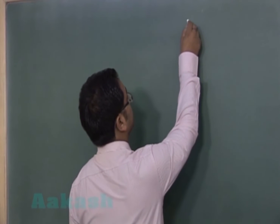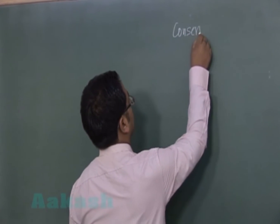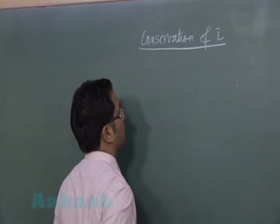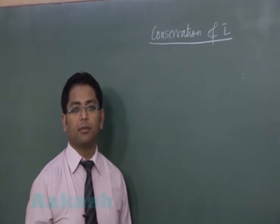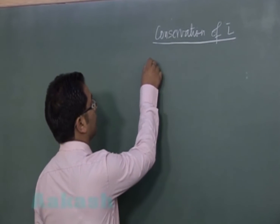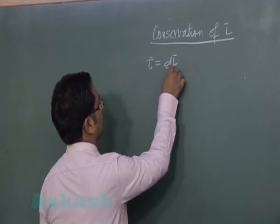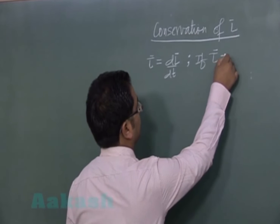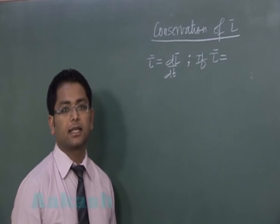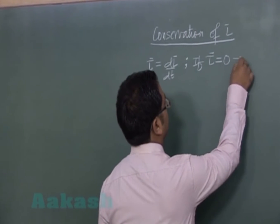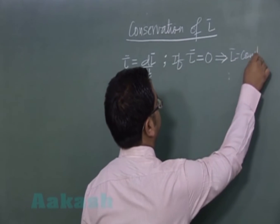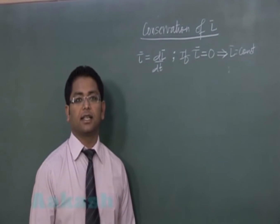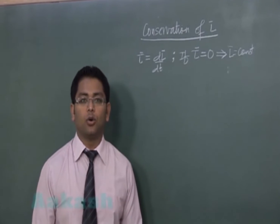We have a very important principle: conservation of angular momentum. It is very similar to conservation of linear momentum. Let's develop the theory. Tau is the torque, which is dL/dt. Tau is the net external torque. If tau external is zero, it implies angular momentum is constant. The theory is very simple, but its applications are quite many and numerically hold a very important role.